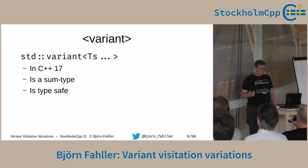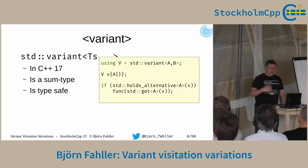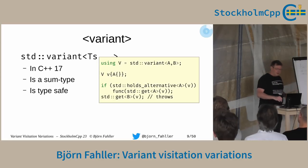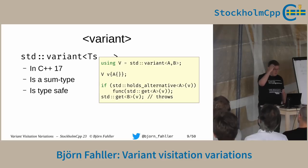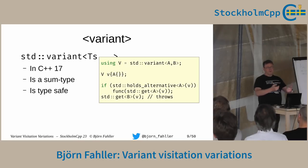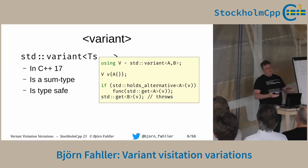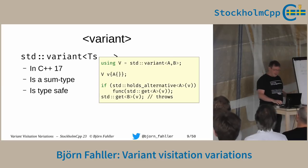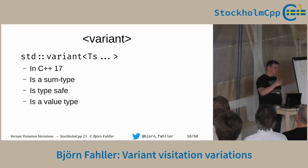It's type safe. If I have a variant of A and B, initialized with an A, I can ask: are you holding alternative A? If so, I can access it and everything is fine. If I do a get of type B, it will throw because it doesn't hold a B, it holds an A. So it's sort of like a union but a more grown-up one — a safe union where the instance knows what type it holds. It's a value type: you can copy them, move them, store them in vectors, whatever.